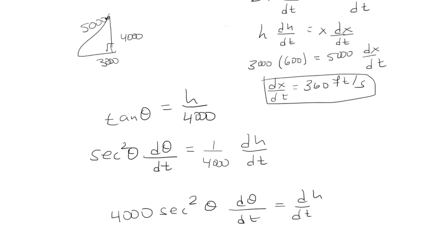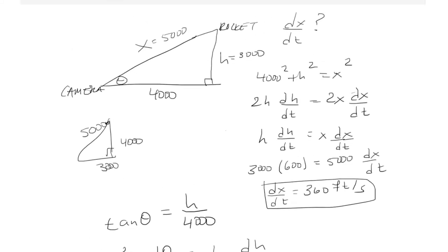Also tangent theta is 3 over 4. We know tangent theta is 3/4 because tangent theta is 3,000 over 4,000, so tangent is 3/4.